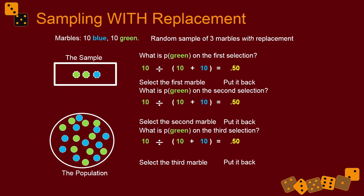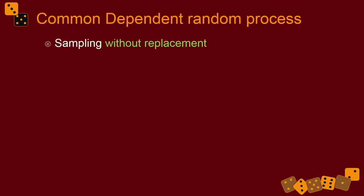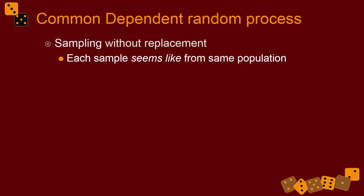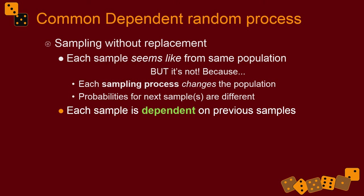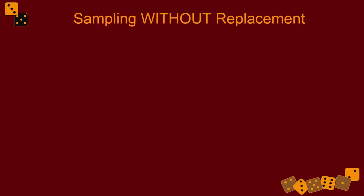Mathematically, sampling with replacement is much easier to deal with, but sampling without replacement is technically what we do. It's when each sample seems like it's from the same population, but it's not — because you keep observations out of the population. Once an item has been sampled, it stays out of the bag and can't be chosen in future sampling. This changes the probabilities for the next samples, making each sample dependent on how all the sampling processes before it turned out.